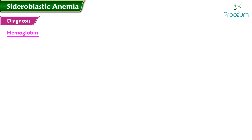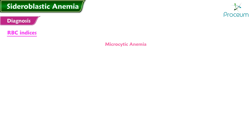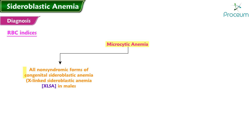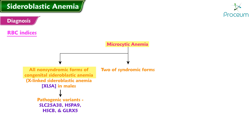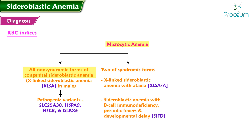Diagnosis: the hemoglobin level is variable among the sideroblastic anemias and is usually below 7 g/dL at diagnosis. Regarding RBC indices, the anemia is microcytic (low mean corpuscular volume) in all non-syndromic forms of congenital sideroblastic anemia — XLSA in males and those due to pathogenic variants in SLC25A38, HSPA9, HSCB, and GLRX5 — and in two of the syndromic forms: XLSA/A and sideroblastic anemia with B-cell immunodeficiency, periodic fevers, and developmental delay.